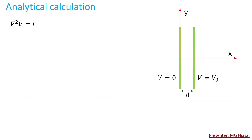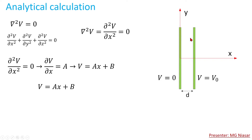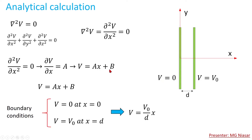Now let us perform some simple calculation. We have a parallel plate capacitor: one electrode connected to zero volts and one connected to voltage V₀, with separation distance D. In the y and z directions the plates are infinite. We solve Laplace's equation, and since everything is uniform in y and z, the derivatives in those directions are zero, simplifying to the second derivative of voltage with respect to x equals zero.